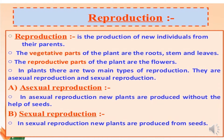Hello friends, today we will discuss about reproduction. Reproduction is the production of new individuals from their parents. There are basically two types of reproduction: asexual reproduction and sexual reproduction.